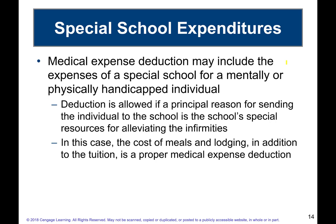Medical expense deductions may include the cost of a special school for disabled individuals. The deduction is allowed when the principal reason for attending is the school's special resources for alleviating the individual's condition — like a school for the blind. In that case, the cost of meals and lodging in addition to tuition are all considered medical deductions.